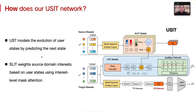Our user-state-based interest transfer network comprises two core components: the USIT module and the SOIT module. USIT models the evolution of user state by predicting the next state in the target domain. As the user state evolves, SOIT adaptively refines interests using interest-level mask attention in the source domain.